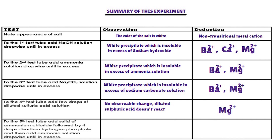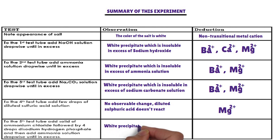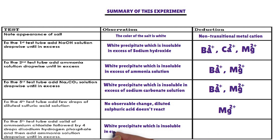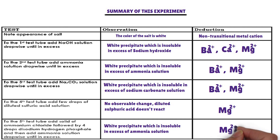Confirmatory test. In the fifth test tube, solid ammonium chloride followed by four drops of disodium hydrogen phosphate, and then ammonia solution dropwise until in excess, are added. The cation that forms a white precipitate under these conditions is magnesium ion. Magnesium ion is confirmed. The cation present in the salt is magnesium ion.